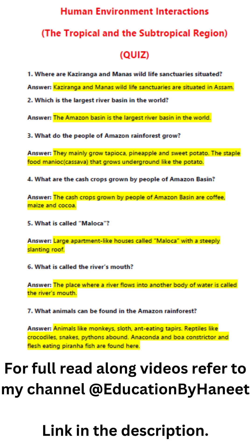Question four: What are the cash crops grown by the people of Amazon basin? The cash crops grown by the people of Amazon basin are coffee, maize, and cocoa. Question five: What is called maloka? A large apartment-like house with a steeply slanting roof is called maloka.